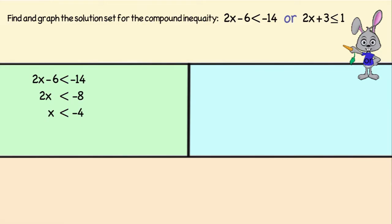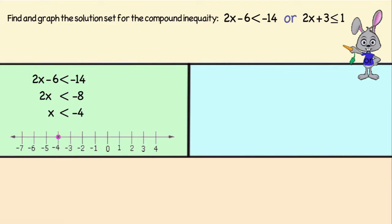Since there's only one variable, we can graph it on a number line. We'll put an open circle on negative 4, since negative 4 is not actually part of the solution — but negative 4.0001 is. The open circle means all the numbers up to negative 4 but not including negative 4. Next we will be shading to the left of negative 4, since all these numbers are part of the solution set. Be sure to also shade the arrow since the graph goes on forever in that direction.